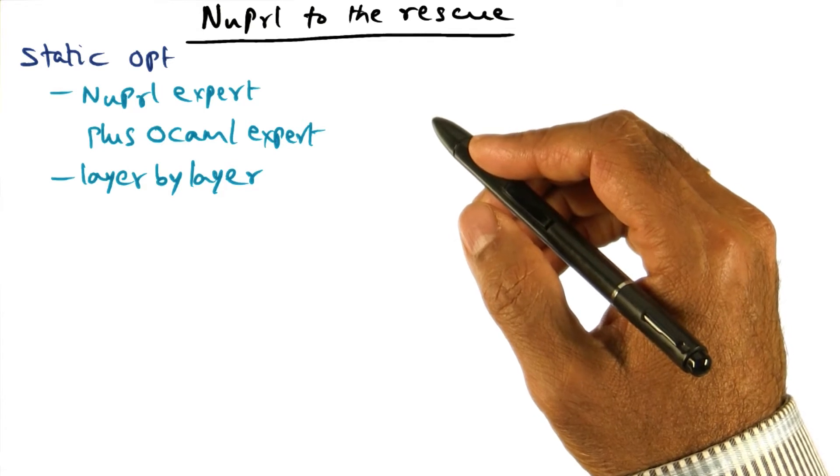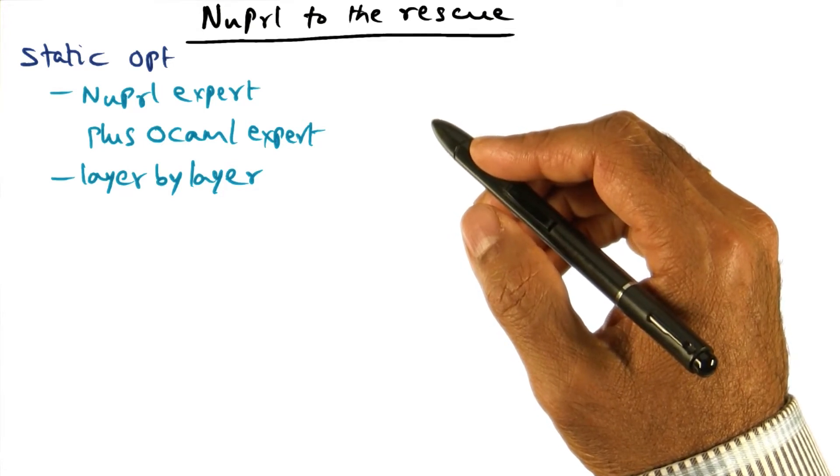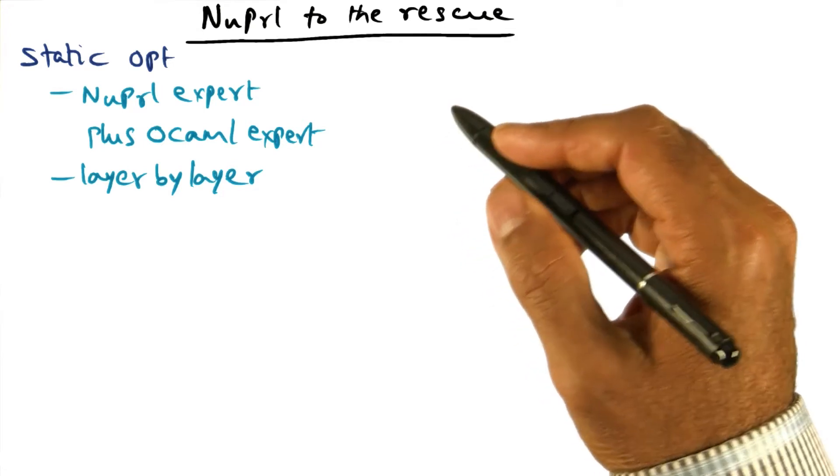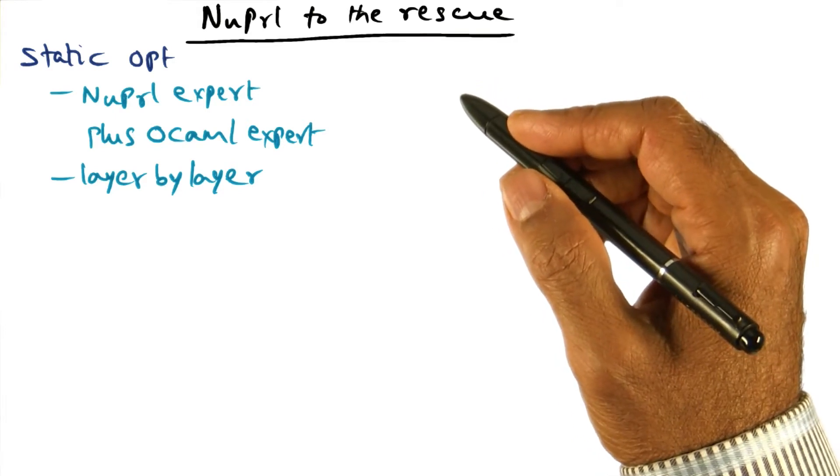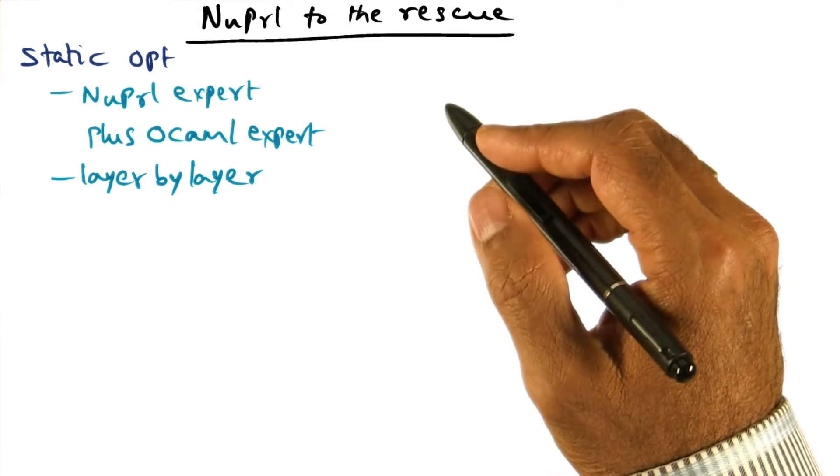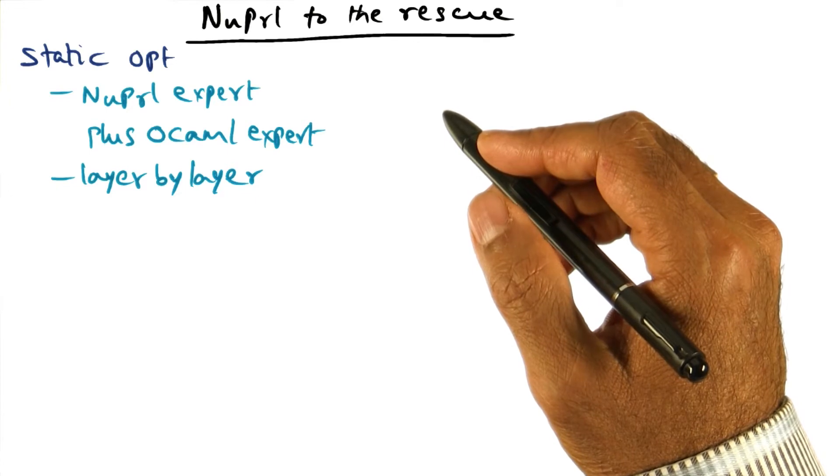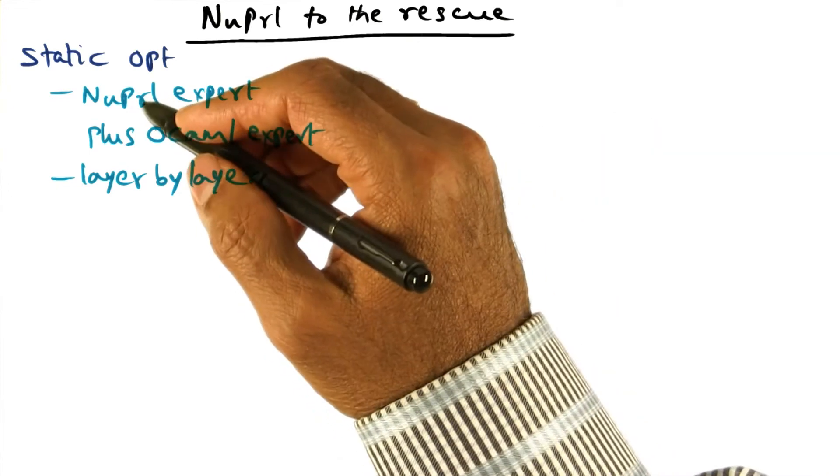We use that tool to convert the unoptimized OCaml code to the NewPearl code. And once you have the NewPearl code, then we can roll up our sleeves and say, how do we go about optimizing this NewPearl code? There is a two-step process for this.